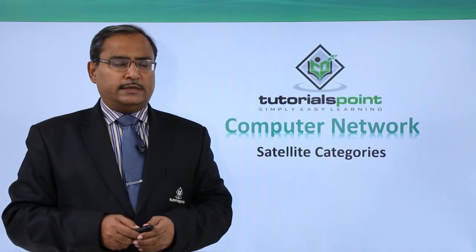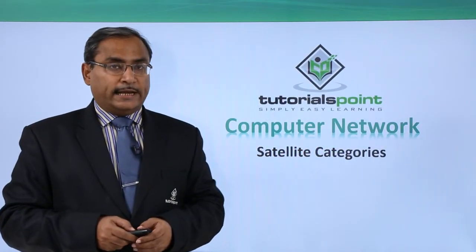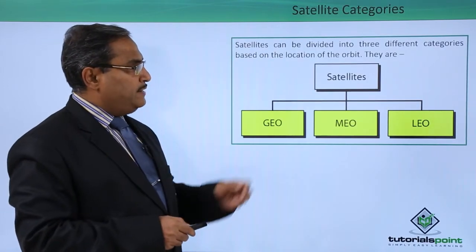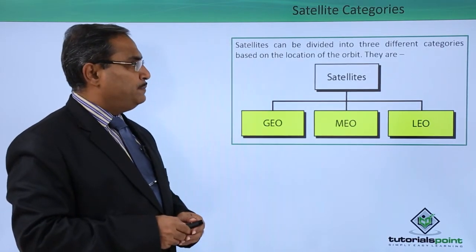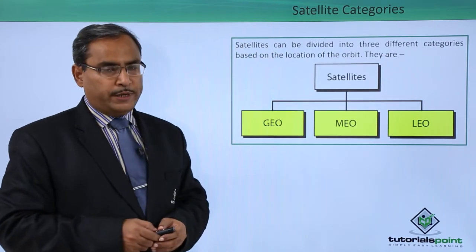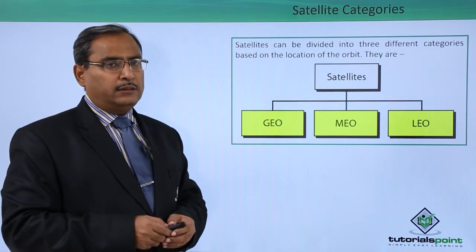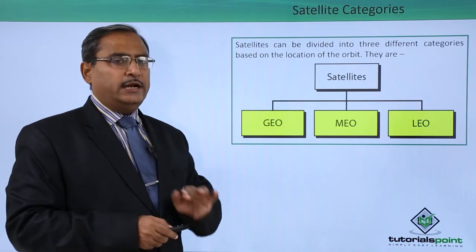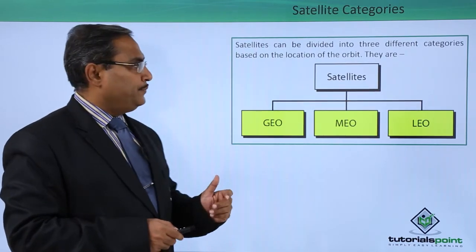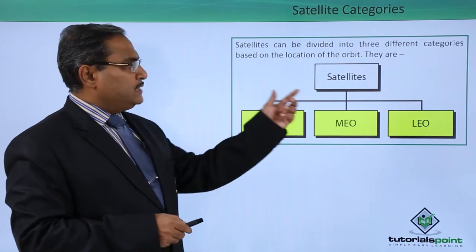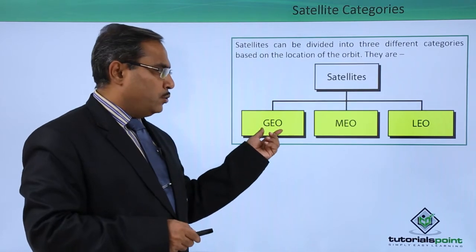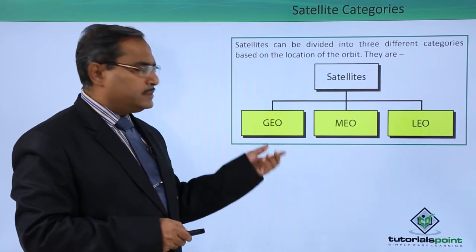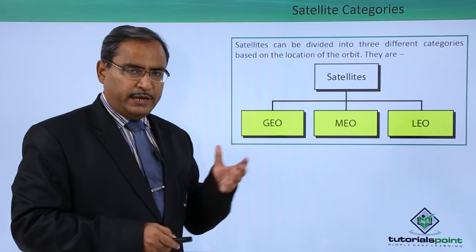We are going to discuss satellite categories. Satellites can be divided into three different categories based on the location of the orbit. Orbit is nothing but a path along which a satellite will rotate around the earth. These particular categories are GEO, MEO, and LEO. Let us discuss each one of them individually.